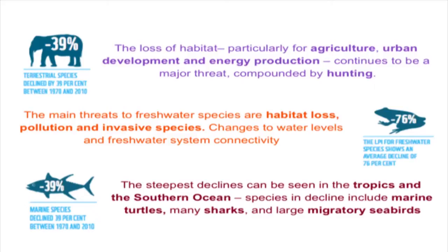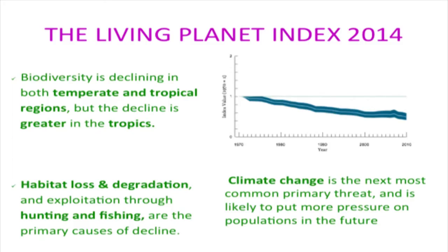Reasons for decline include agriculture, urban development, energy production, habitat loss, and invasive species. The steepest decline is in tropics and southern Asia, where marine turtles, sharks, and migratory sea birds have suffered most. Biodiversity is declining in both temperate and tropical regions, but more so in the tropics. Climate change is also affecting plant and animal life, as animals are adapted to specific climatic conditions and temperatures.